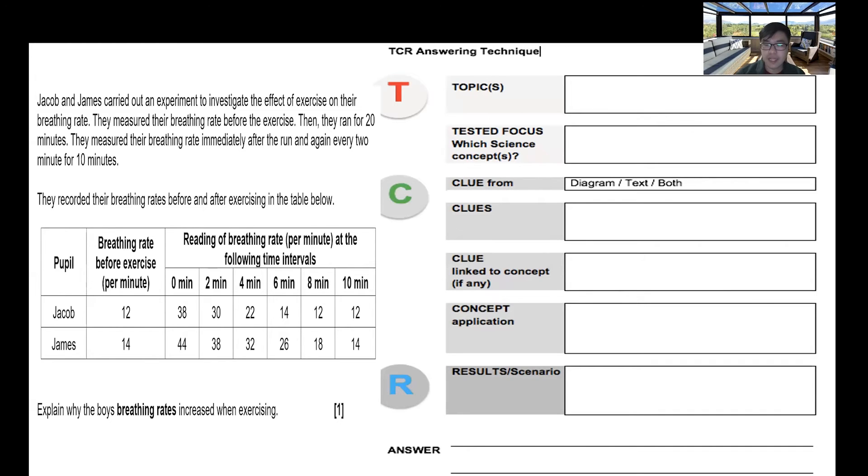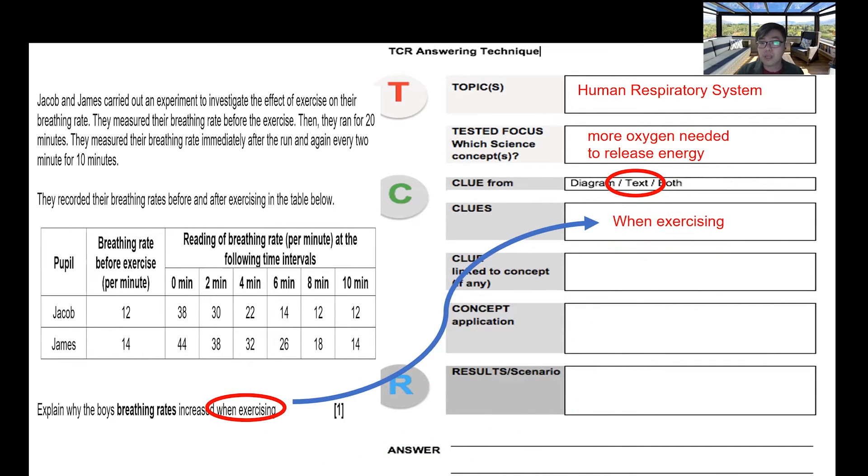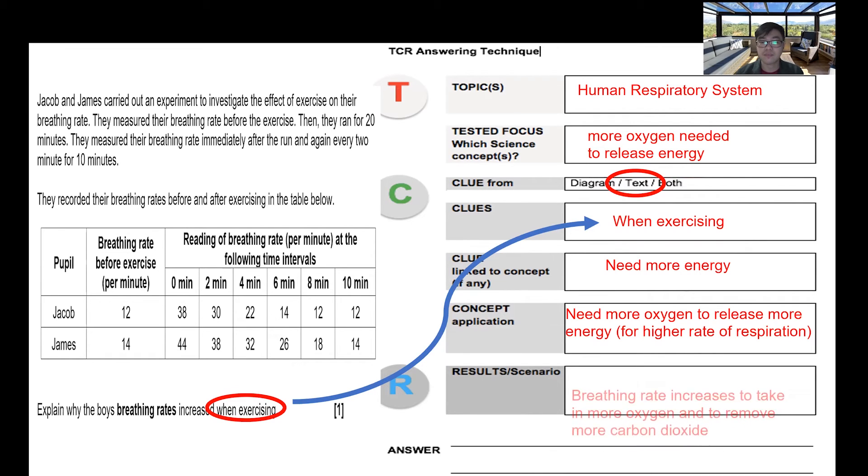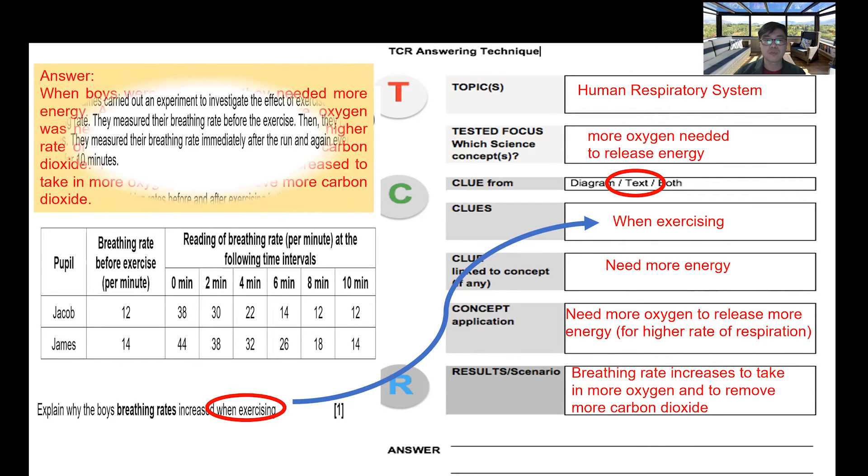Let's use the TCR answering technique. The topic that we are looking at is human respiratory system. The test focus is about saying more oxygen is needed to release more energy, and we actually can look out from the text itself. When exercising - that is where the clue is - you need more energy. The application is that when you exercise, you need more energy. Therefore, you need more oxygen to release more energy for higher rate of respiration. We link back to answering the question: breathing rate increases to take in more oxygen and to remove more carbon dioxide.